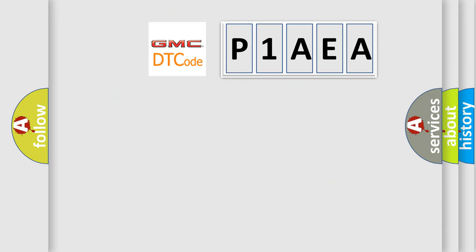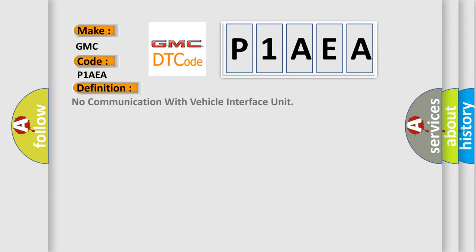So, what does the Diagnostic Trouble Code P1AEA interpret specifically for GMC car manufacturers? The basic definition is: No communication with vehicle interface unit. And now this is a short description of this DTC code.